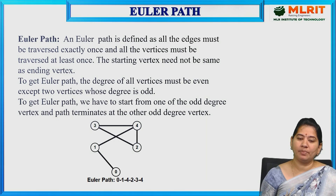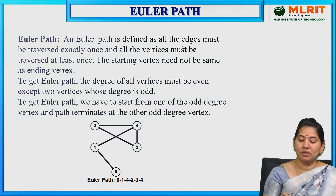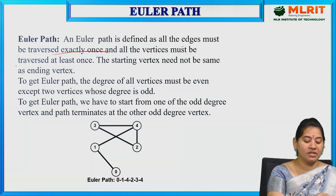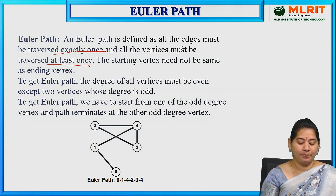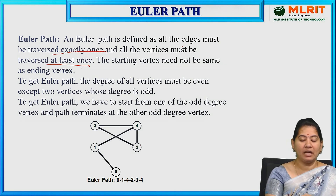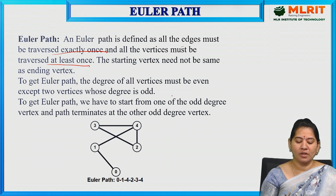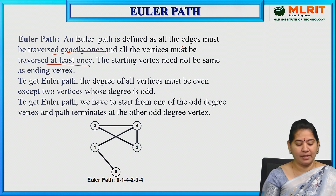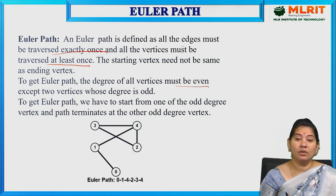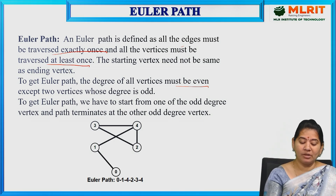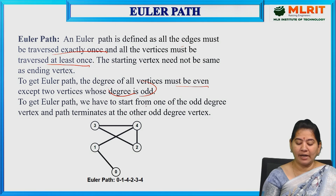An Euler path is defined as a path where all edges must be traversed exactly once and all vertices must be traversed at least once. Vertices can be repeated but edges should not. The starting vertex need not be the same as the ending vertex. To have an Euler path, the degree of all vertices must be even except exactly two vertices whose degree is odd. The path starts from one odd-degree vertex and terminates at the other odd-degree vertex.